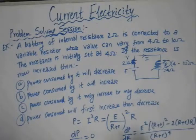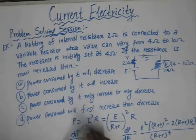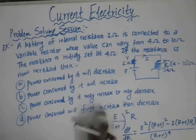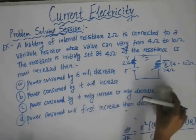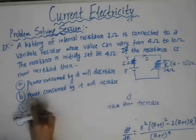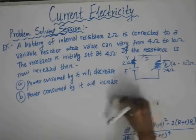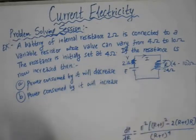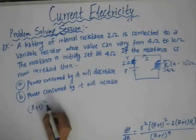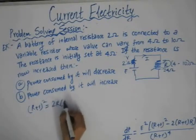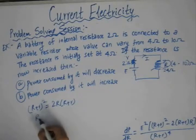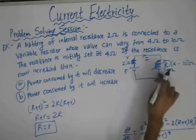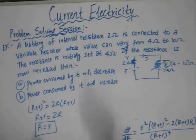After differentiating and equating this expression to zero, we get the value: (r plus R) squared equals 2R times (r plus R). This gives us the value of capital R equals small r. So when the external resistance equals the internal resistance, the power delivered is maximum.